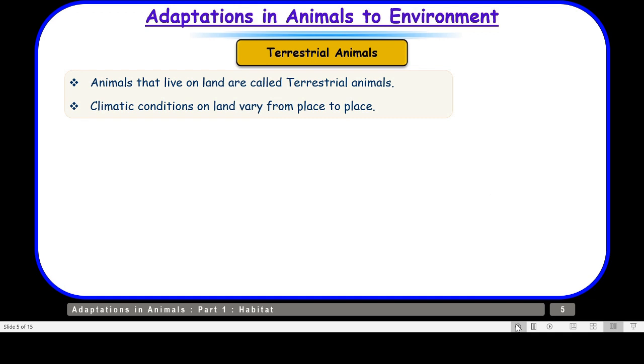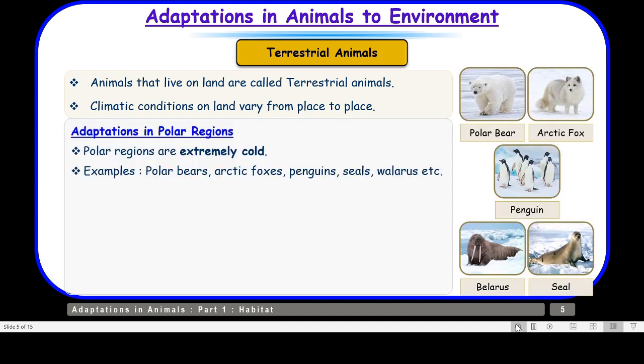Climatic conditions on land vary from place to place. First, we'll talk about adaptations shown by animals that live in polar regions. Polar regions are covered with snow and are extremely cold. Animals like polar bears, arctic foxes, penguins, seals, and walruses are found in polar regions.